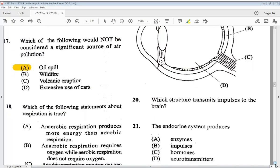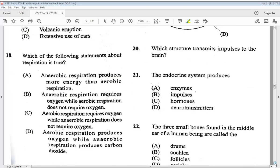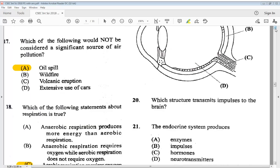18 now. Which of the following statements about respiration is true? A, anaerobic respiration produces more energy than aerobic respiration. B, anaerobic respiration requires oxygen while aerobic respiration does not require oxygen. C, aerobic respiration requires oxygen while anaerobic respiration does not require oxygen. Or D, aerobic respiration produces oxygen while anaerobic respiration produces carbon dioxide. So we know that the answer is C. This is another repeated question.